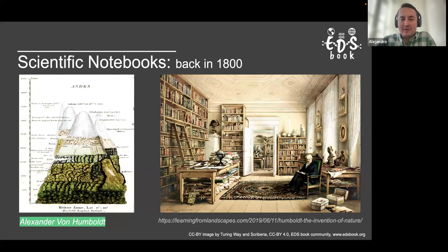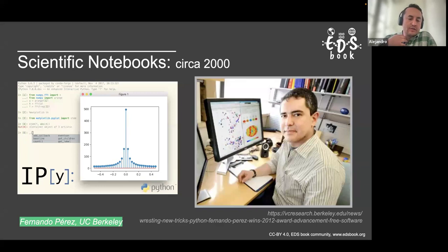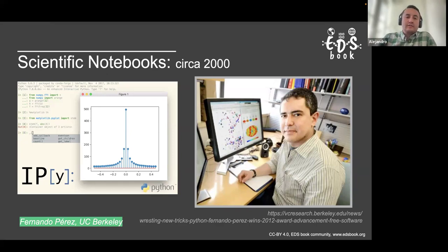Scientific notebooks have been a way that scientists share information. Around 2000, with scientific computation, we saw emerging programming languages like Python offering capabilities to explore and analyze data. But the shell that Python offered wasn't enough for scientists. So Fernando Perez, at that time a graduate student at Colorado University Boulder — now at Berkeley — created IPython: a more interactive shell where he could do experiments in physics and explore data interactively. IPython was a new way to present and visualize results.